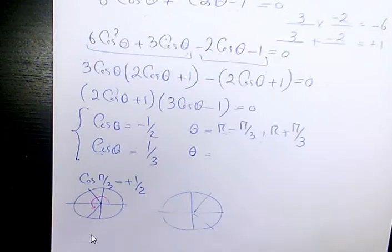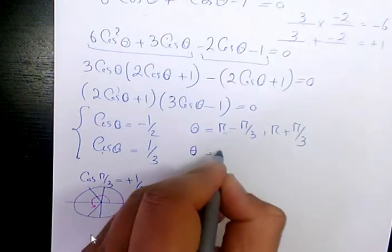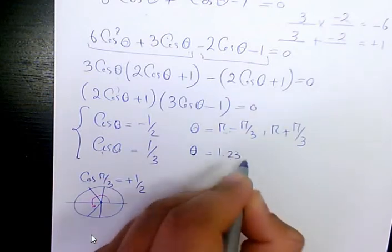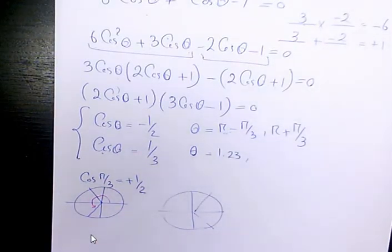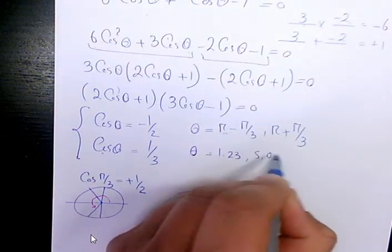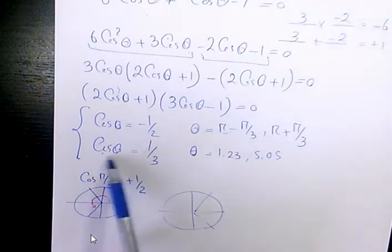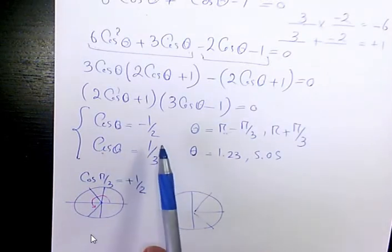So we have 1.23, and the other answer will be 2 times pi minus 1.23, which is going to be 5.05. So these are the two answers to cosine theta equals 1 over 3. I used the calculator to find it.